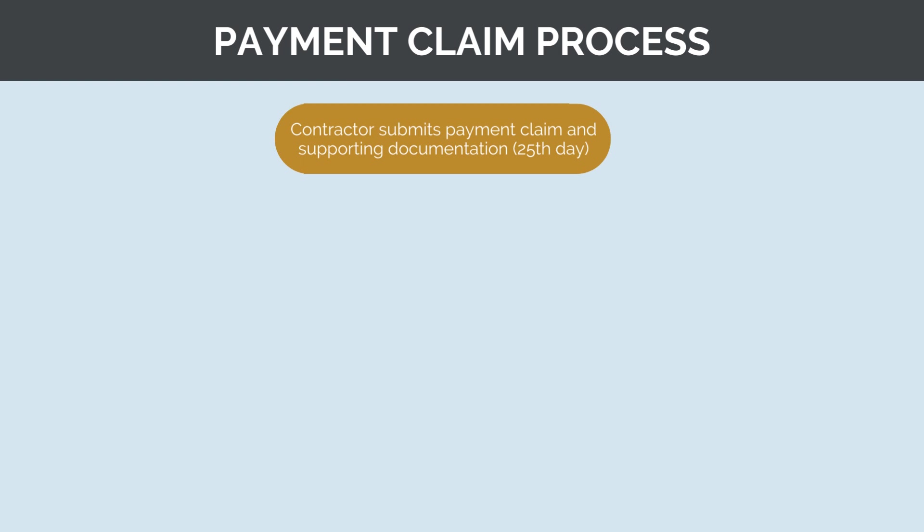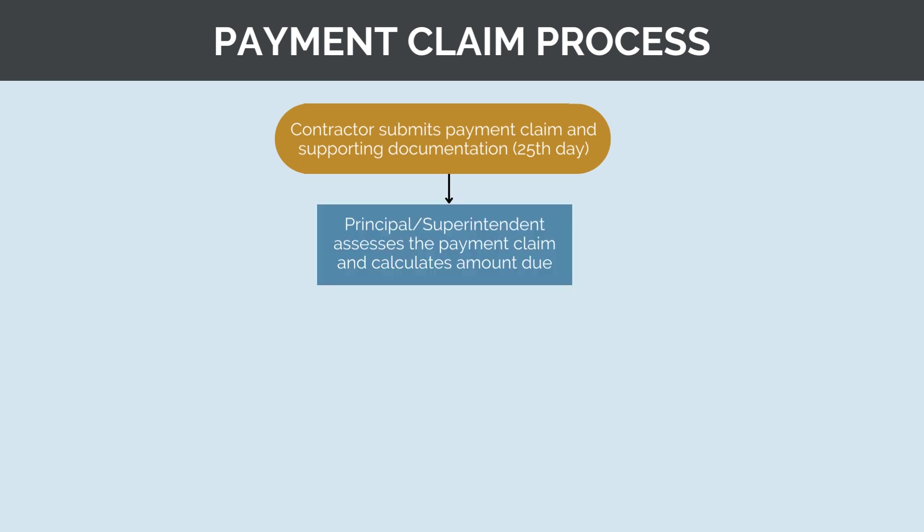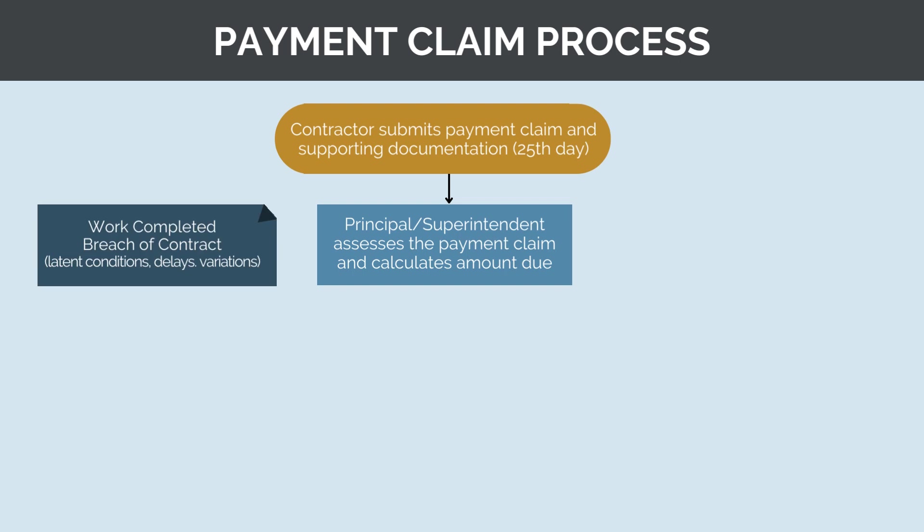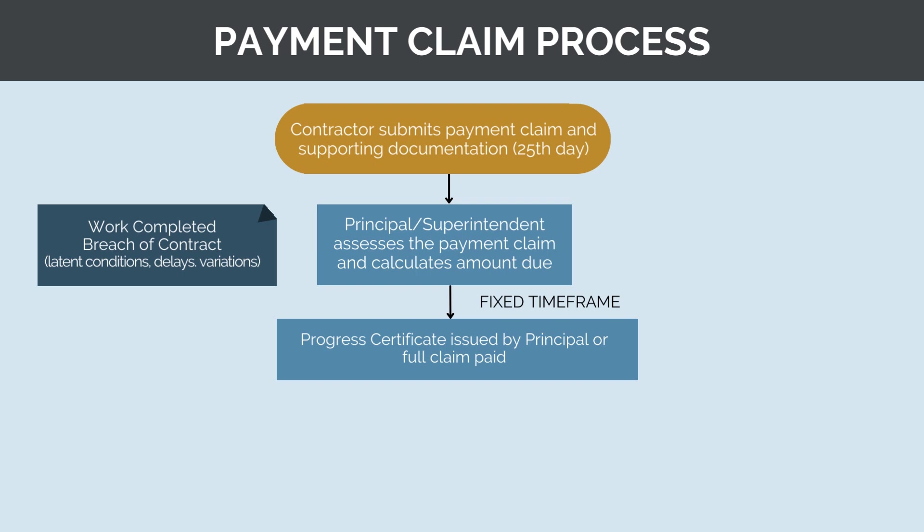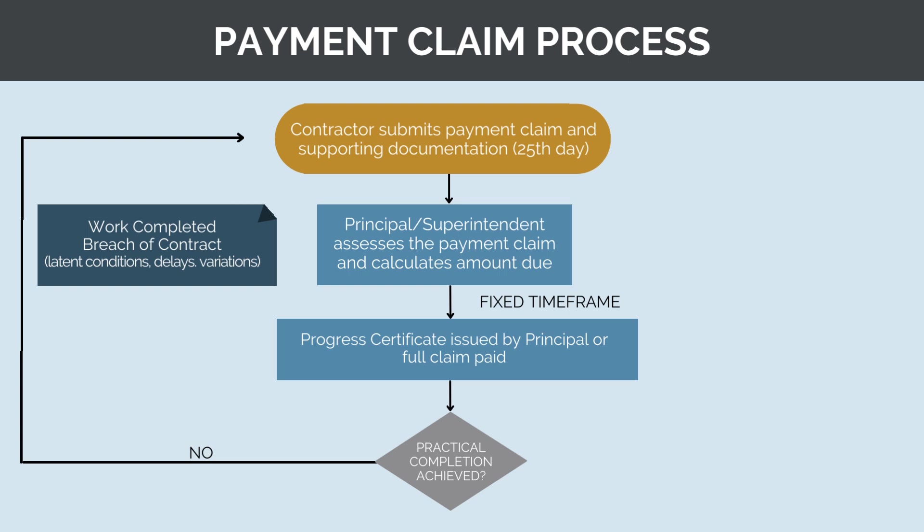Payment claims typically need to be submitted before the 25th of each month. The principal will then assess the claim based on works completed, any breaches of contract, and any additional claims such as variations and extensions of time. Generally, payment will only be made for works that have been completed. Contractors tend to over-claim, so the principal will need to carefully verify how much work has actually been completed. There is typically back and forth between the principal and contractor as they agree on what works have been completed. The principal also has a fixed timeframe to respond — typically around five working days — and if delayed in responding, the claim will automatically be approved. Once the value of the claim is agreed upon, a progress payment certificate will be issued, and if practical completion has not been achieved, this process will repeat monthly.